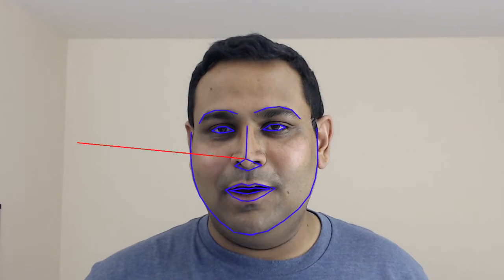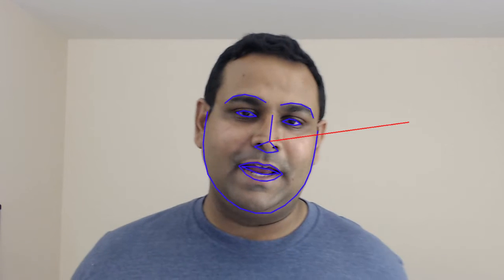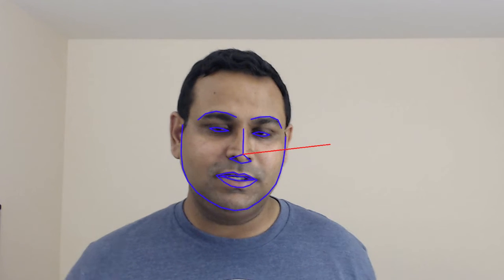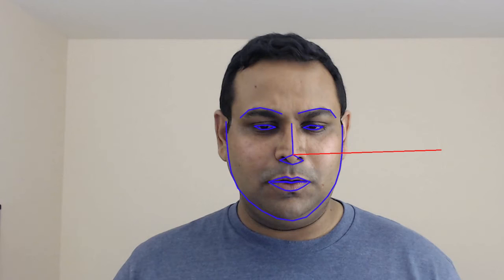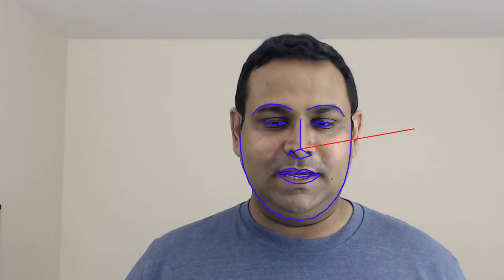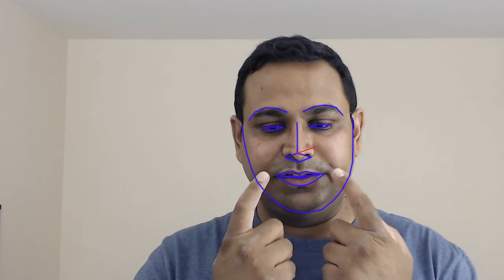All the details are in my blog post on head pose estimation — I've shared a link below. But if you want to know quickly, what you need is a few points on the face: the two corners of the eyes and the tip of the nose, the two corners of the